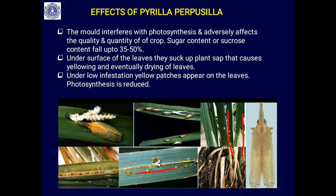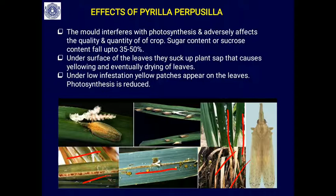Both the adult flies and nymphs suck plant sap from the underside of leaves, causing yellowing as the chlorophyll is lost. Eventually the leaves dry out. Under heavy infestation the entire leaf dries up, while under low infestation yellow patches appear on the leaves and photosynthesis is reduced.